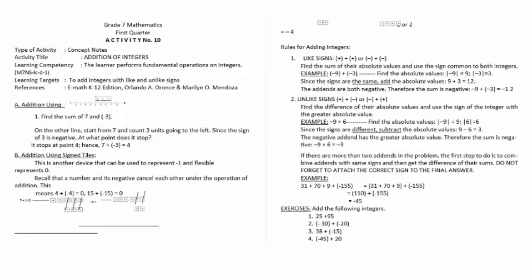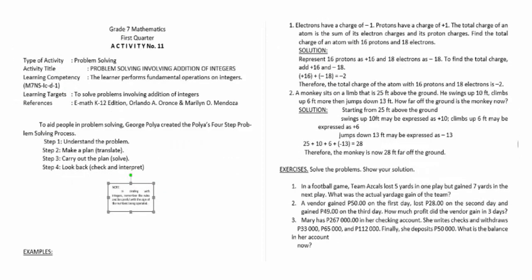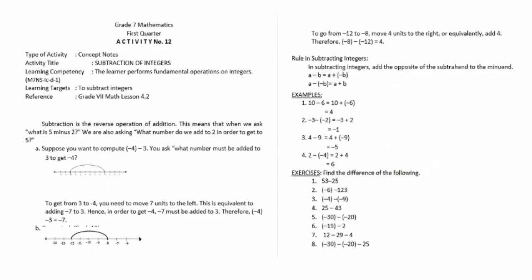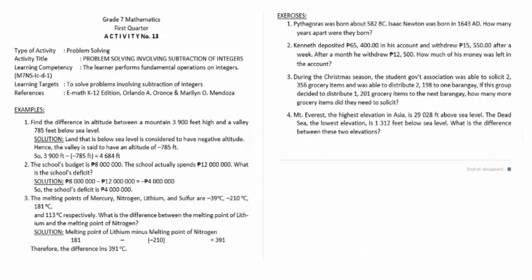Activity number nine is the absolute value of a number. Activity number ten is addition of integers. Activity number eleven is problem solving involving addition of integers. Activity number twelve is subtraction of integers, and activity number thirteen is problem solving involving subtraction of integers.